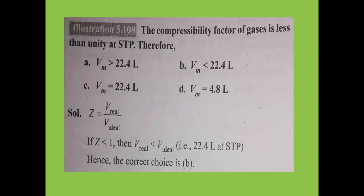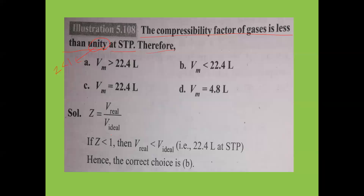Another important problem: the compressibility factor of a gas is less than unity (less than 1) at STP. They ask for molar volume Vm. Molar volume is the volume of one mole of gas. Generally, molar volume at STP = 22.4 liters.